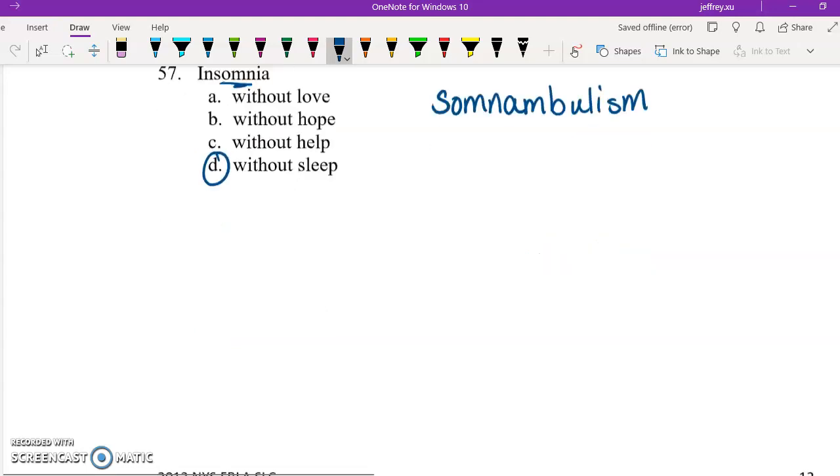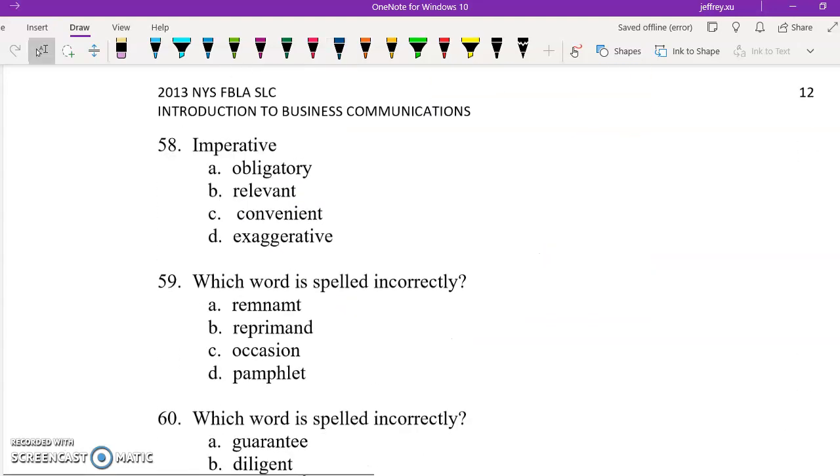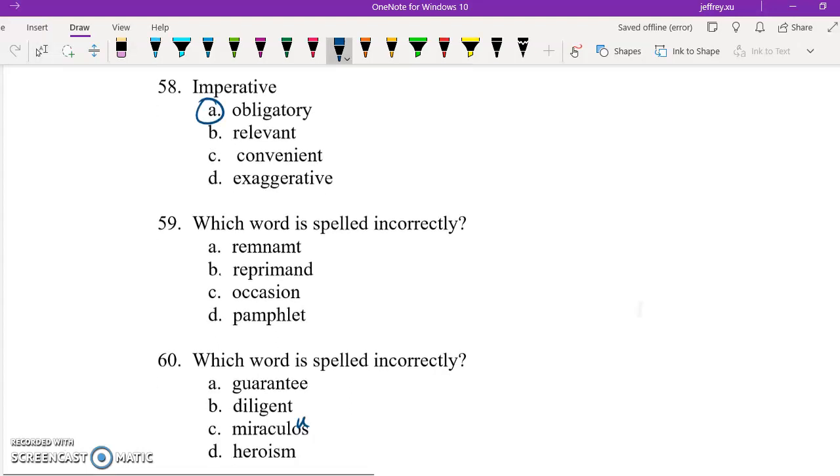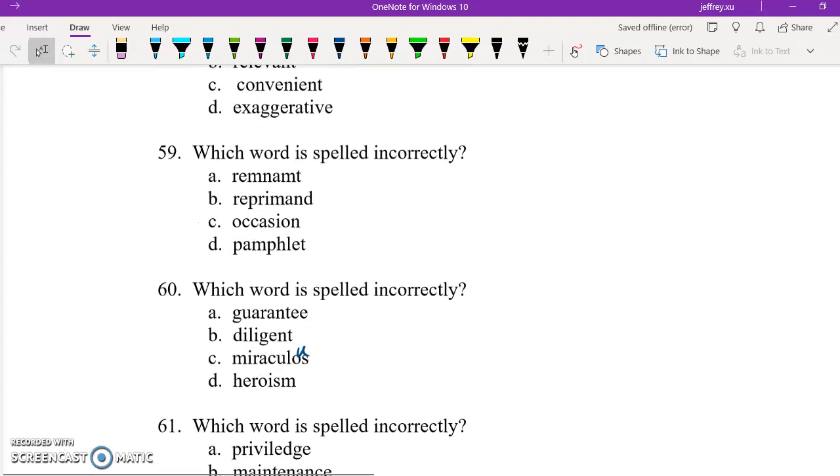Question number 58, imperative. If something's imperative, it means that you have to do it. So imperative most closely aligns with obligatory, which basically is the same thing that I just said. 59, which word is spelled incorrectly? Remnant should have the, oh that's correct, but this should be an N. Sorry. So the M should be an N. So A is your correct answer for 59.